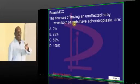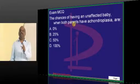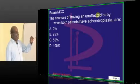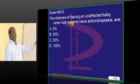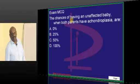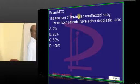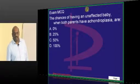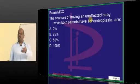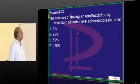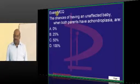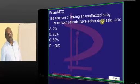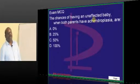Now, a challenging question — if you answer this correctly, you are great students. What is the chance of having an unaffected baby when both parents have achondroplasia? This applies not only to achondroplasia but to any autosomal dominant condition. Think like Mendel and try to answer.